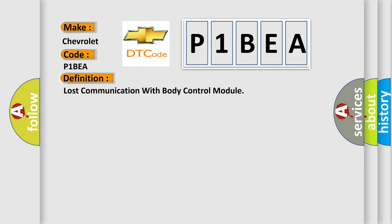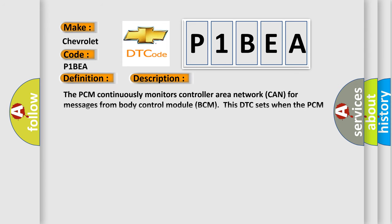And now this is a short description of this DTC code. The PCM continuously monitors controller area network CAN for messages from body control module BCM. This DTC sets when the PCM does not receive the BCM message within the defined amount of time.